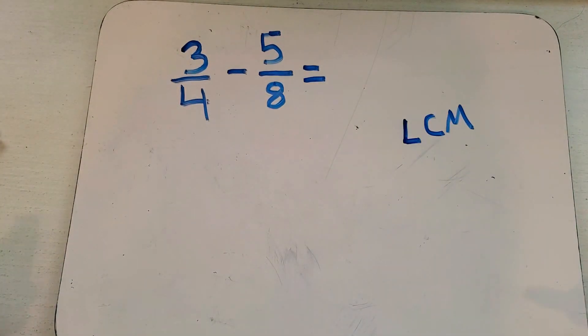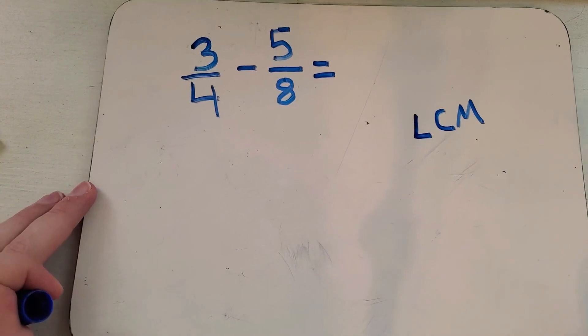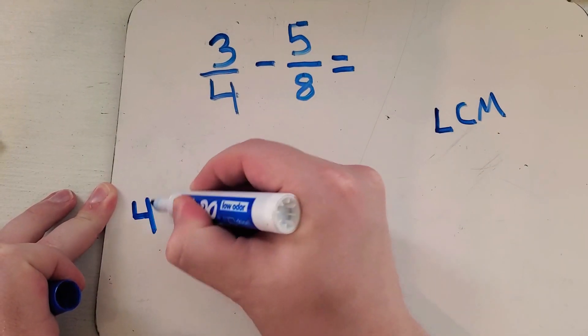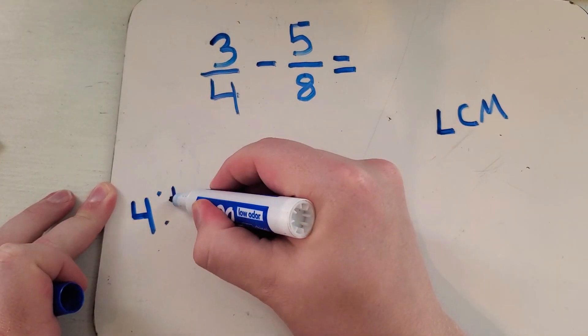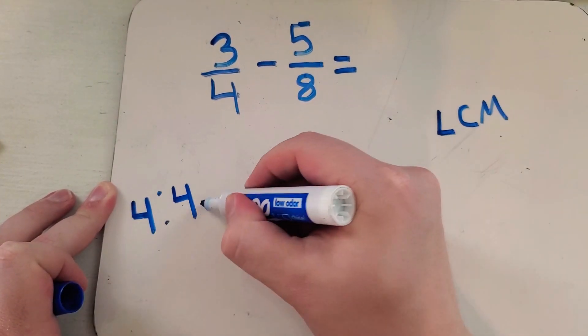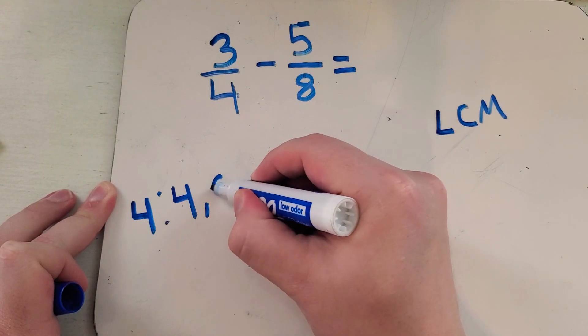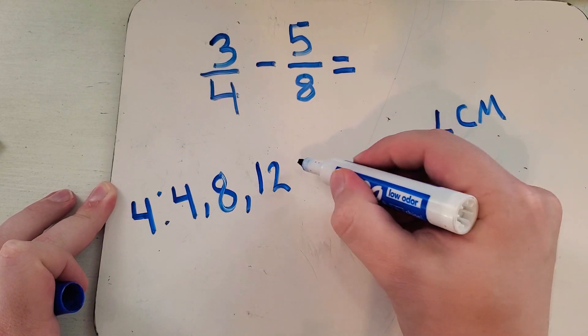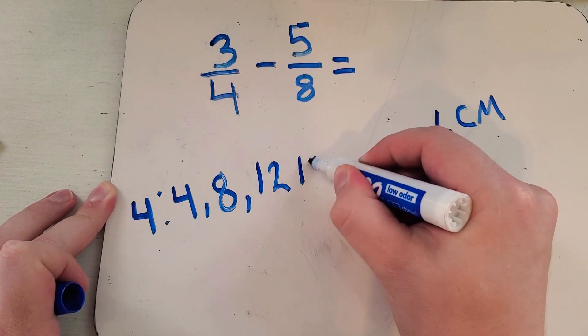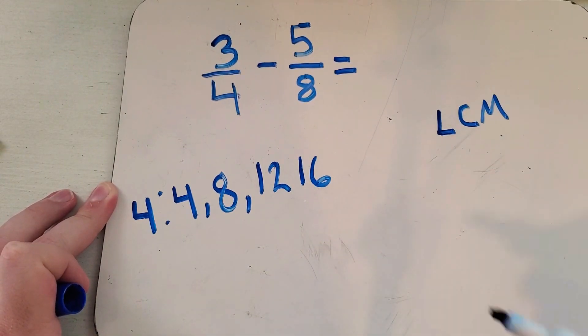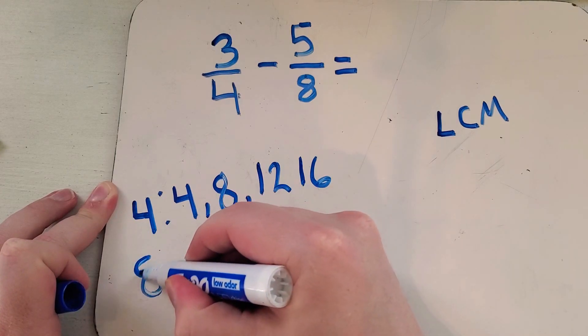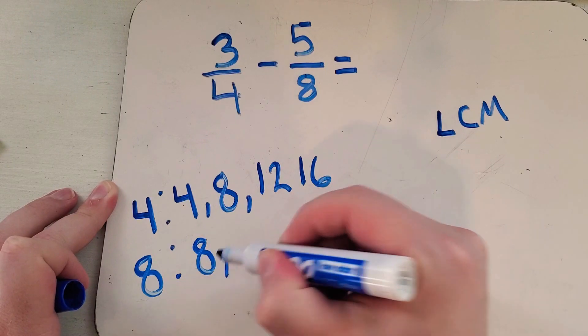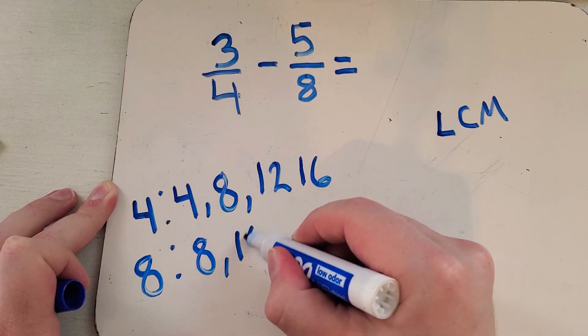So you might already know what the least common multiple is just by looking at these, but if you don't you can always write out the multiples. My multiples for four would be one times four is four, four times two is eight, four times three is twelve, four times four is sixteen. Then I go and start looking at my multiples of eight. Eight times one is eight, eight times two is sixteen.